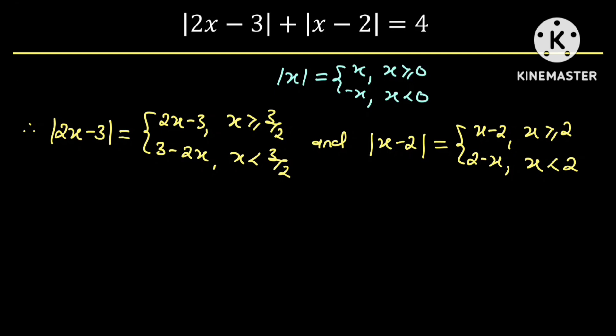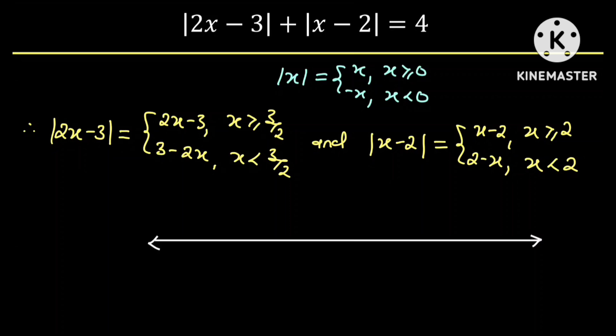This leads to four different cases, and we are going to analyze these four cases using the number line. We have to partition this number line into three regions using the critical values 3/2 and 2. So here is 3/2 and here is 2.